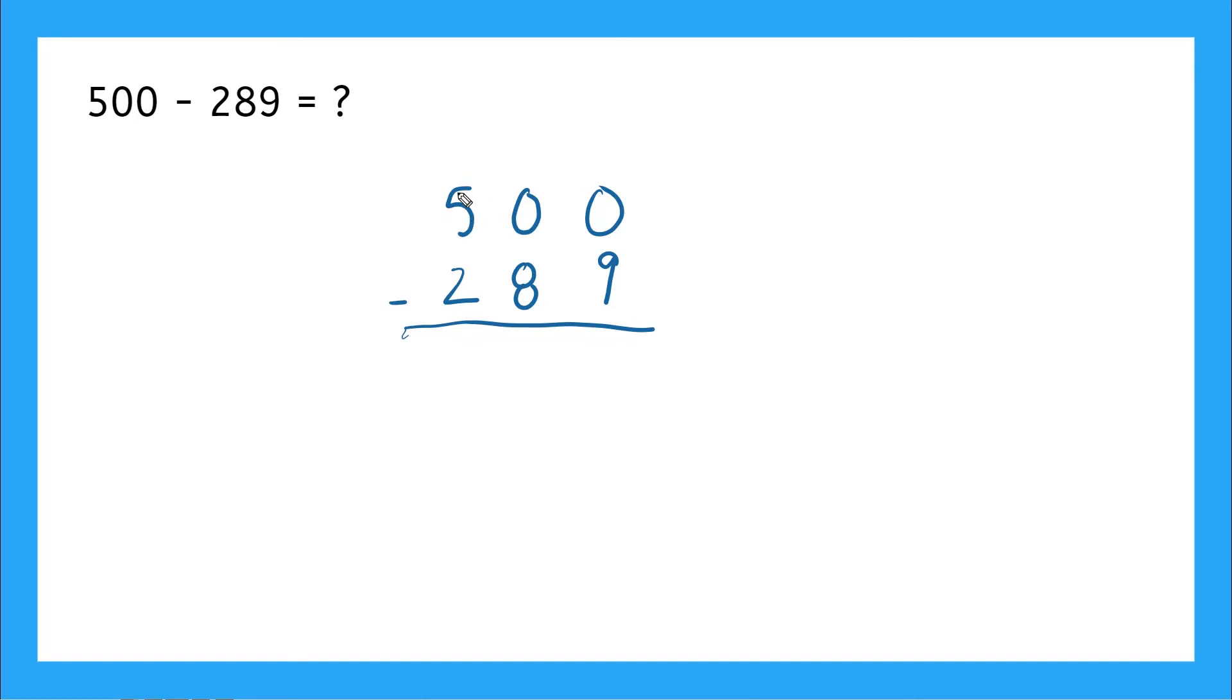I'm going to take a hundred from my hundreds column. So this will give me a four. So I have four in my hundreds column, and then I'm giving that hundred over here to my tens place. So this will give me a 10 in the tens place. So that's a hundred.